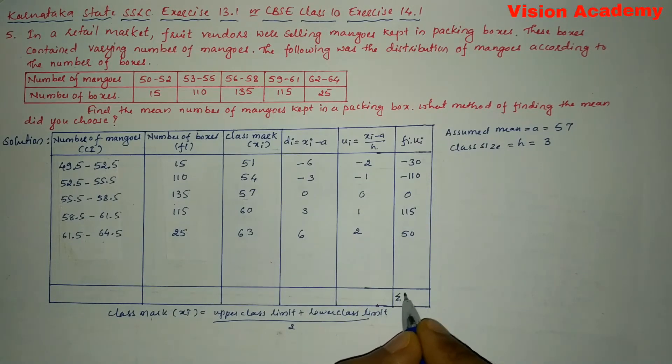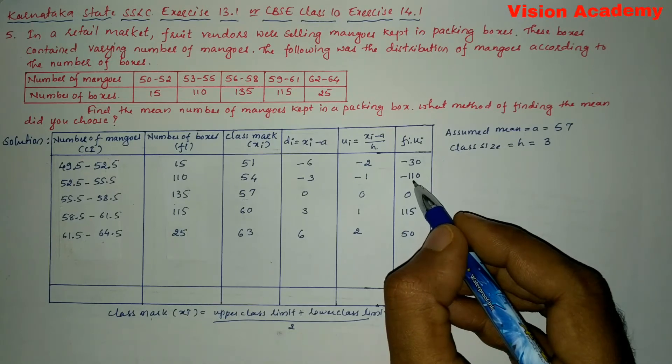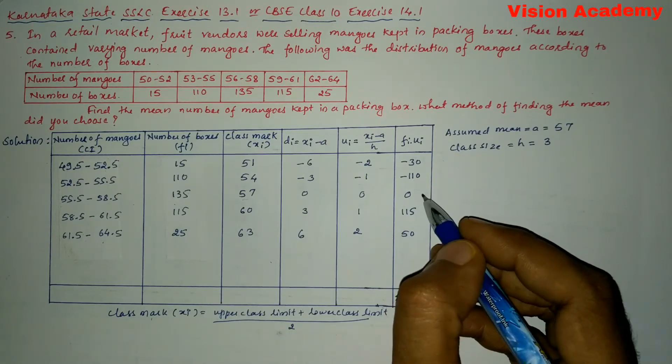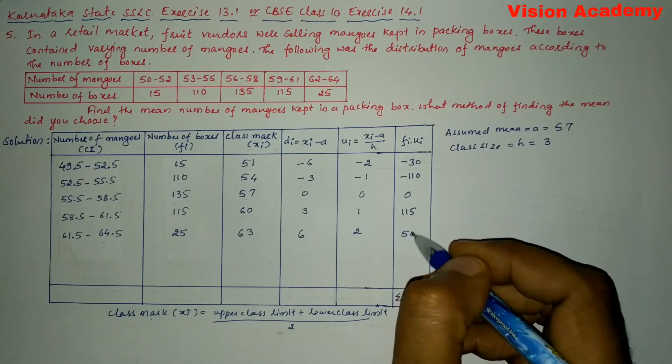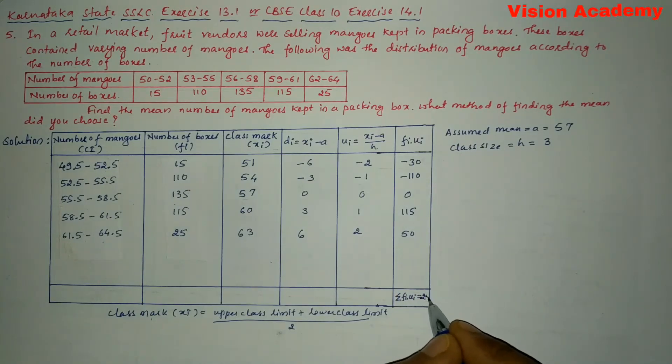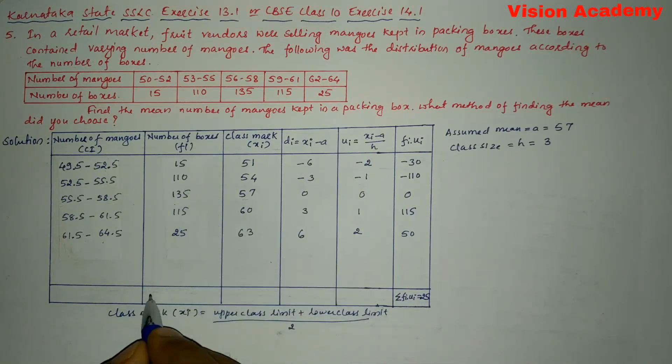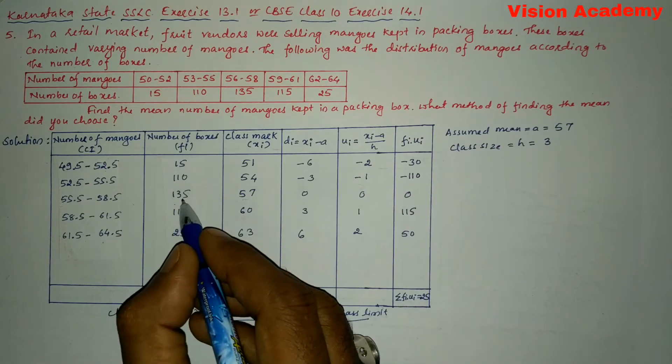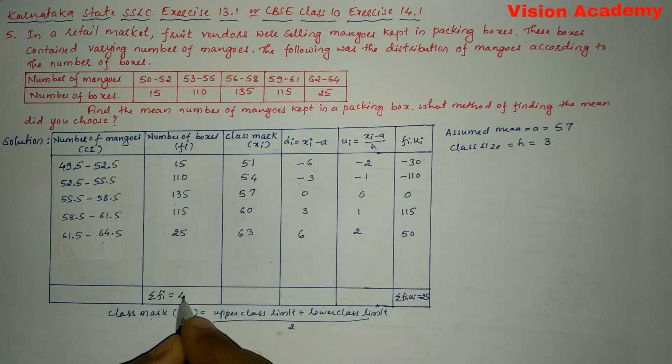So now let us find out summation of fi ui. So here we can see here minus 30 minus 110 gives us minus 140. Minus 140 plus 115 plus 50 gives us 25. Now we will write here summation of fi is equal to here 15 plus 110 plus 135 plus 115 plus 25 gives us 400.